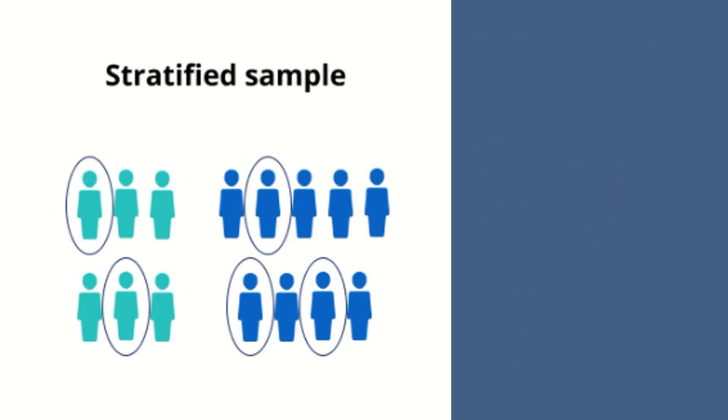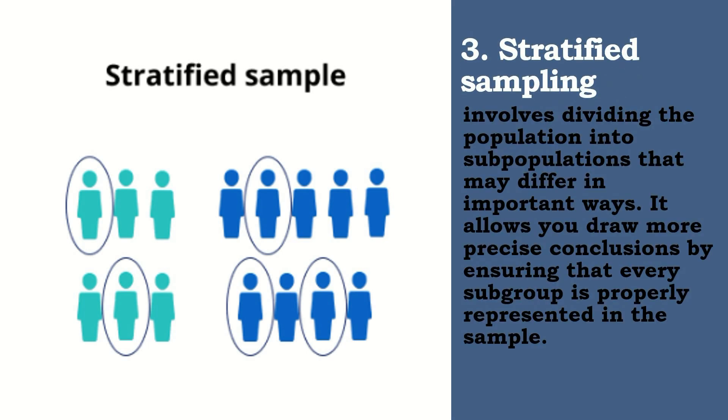The third type of probability sampling is the stratified sampling. When we say stratified sampling, it involves dividing the population into subpopulations that may differ in important ways. It allows you to draw more precise conclusions by ensuring that every subgroup is properly represented in the sample.